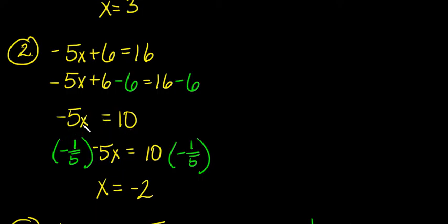And since these are multiplied by each other, I can multiply it by its reciprocal, which is negative 1 fifth, to get it equal to 1x. Same as dividing by a negative 5. And dividing 10 by a negative 5, you're left with x equals negative 2.